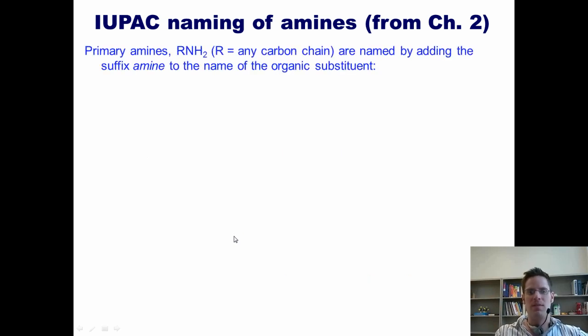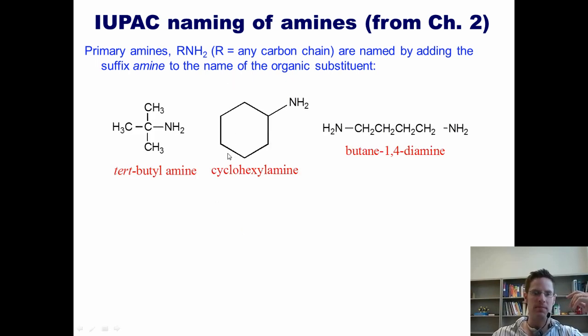Primary amines that have this generic formula are named by adding the suffix amine to the name of the organic substituent. Thus, for this example, we have a tert-butyl group. I could call this primary amine tert-butyl amine. Here I have a cyclohexane, but I have an amine coming off of it, so I could call it cyclohexyl amine. You could also call it cyclohexanamine. This example right here has two amines, so it's a diamine, stuck to a butane. So I call it butane 1,4-diamine. The numbers are added to indicate which positions the nitrogens are stuck to.